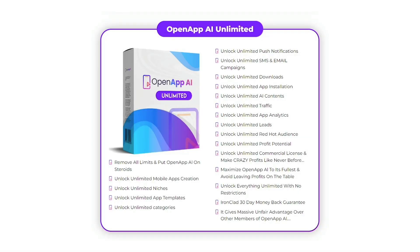Then you're going to get the Unlimited upgrade, where we remove all the limits and put OpenApp AI on steroids for you: unlimited mobile app creation, unlimited niches, unlimited app templates, unlimited categories, unlimited push notifications, unlimited SMS and email campaigns, unlimited downloads, unlimited app installs, unlimited AI content, unlimited traffic, unlimited analytics, unlimited leads, unlimited red-hot audience, and unlimited profit potential. Absolutely awesome with the Unlimited upgrade.